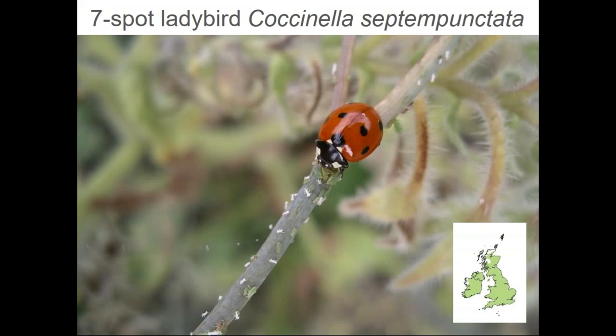We'll begin with the seven-spot ladybird — an iconic species, Coccinella septempunctata, which pretty much always looks the same. We're including small distribution maps on each photo so you get an idea of where to find them across the UK and Ireland. The seven-spot's pronotum has two white parts on either side. It has seven spots: three on either wing case and one directly behind the pronotum. It's quite a large ladybird within the UK.